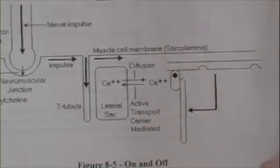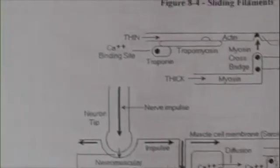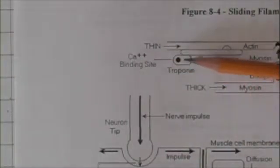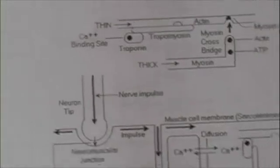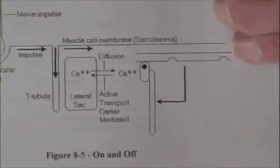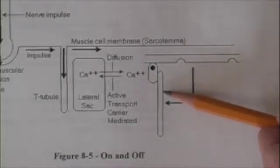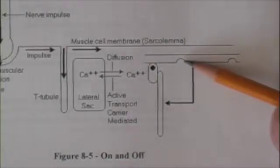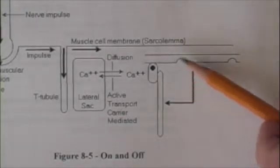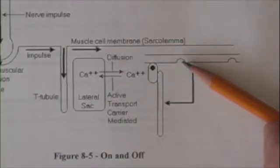Now guess what? The calcium binds to the calcium binding site on the troponin. When it binds, it causes the tropomyosin to swing away from the binding site on the actin. That is, it uncovers the myosin binding site.